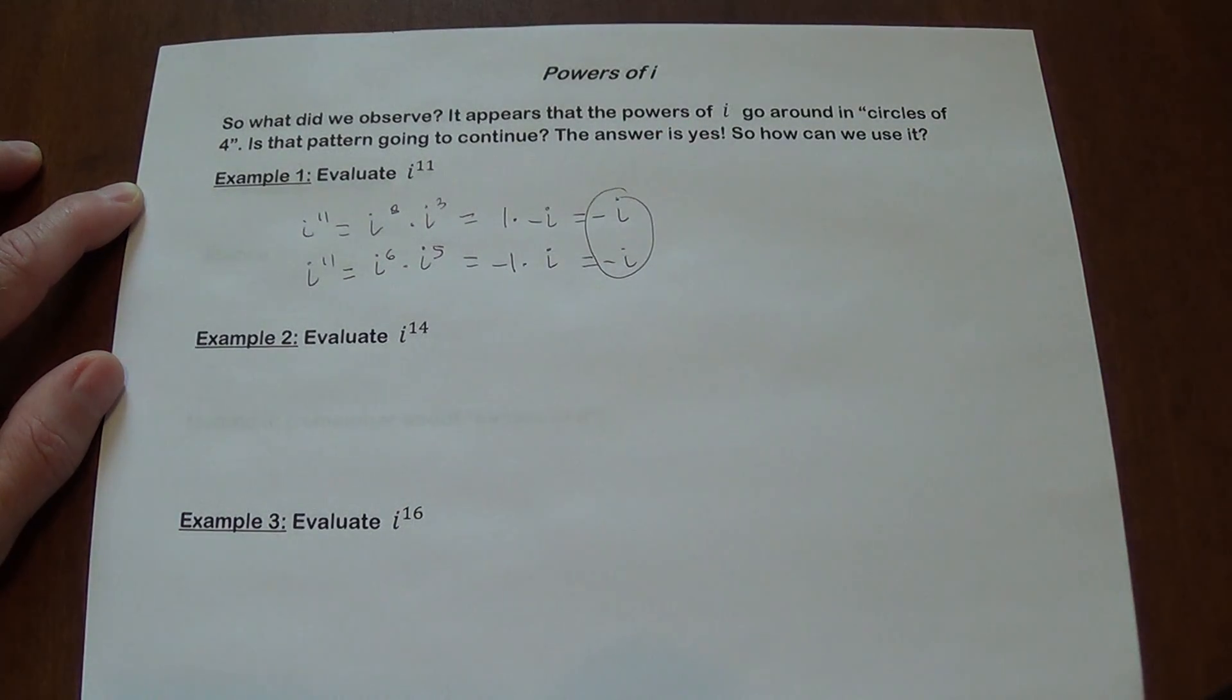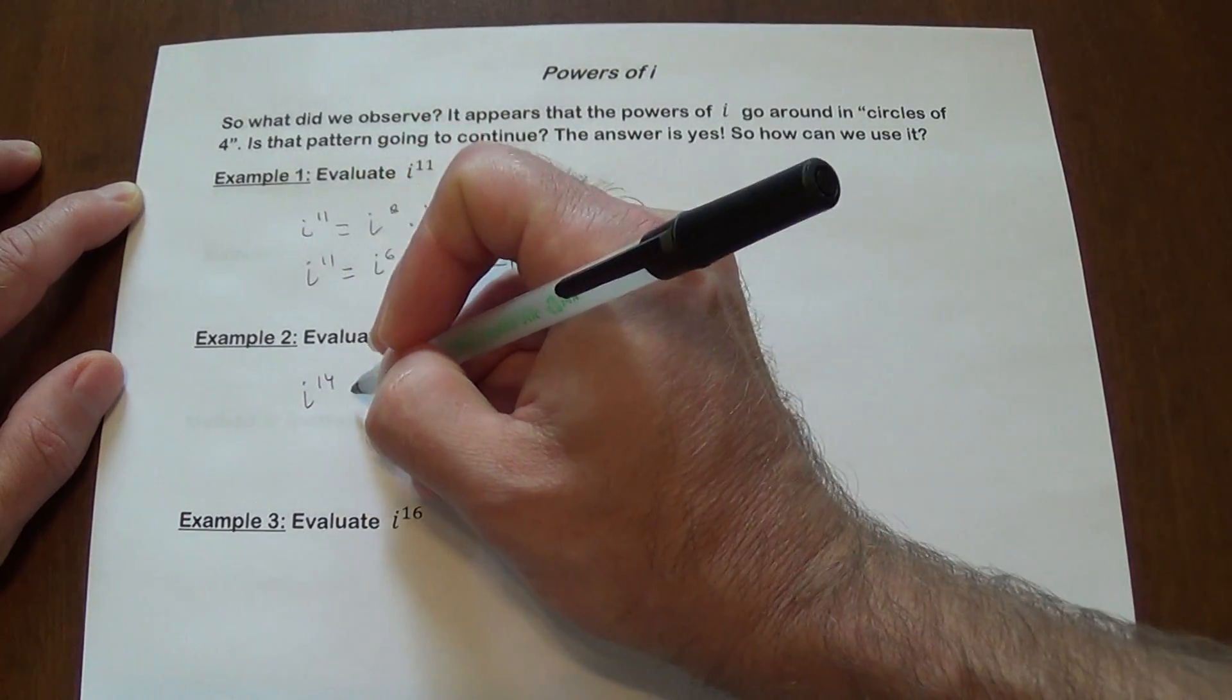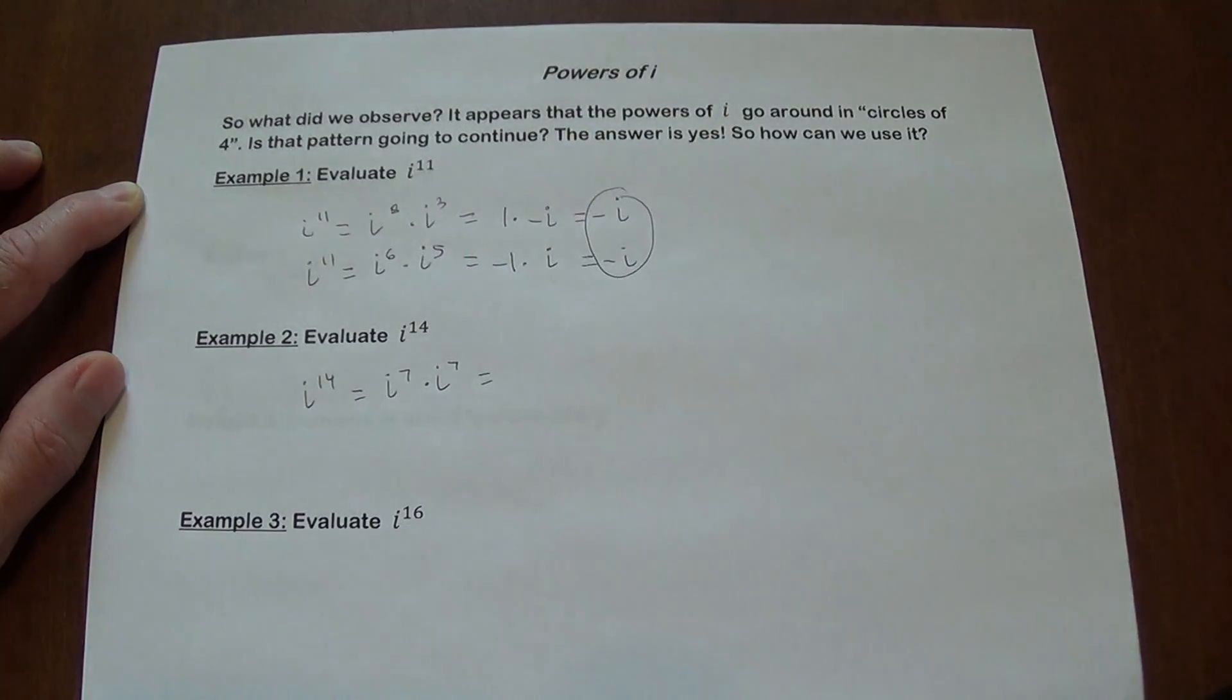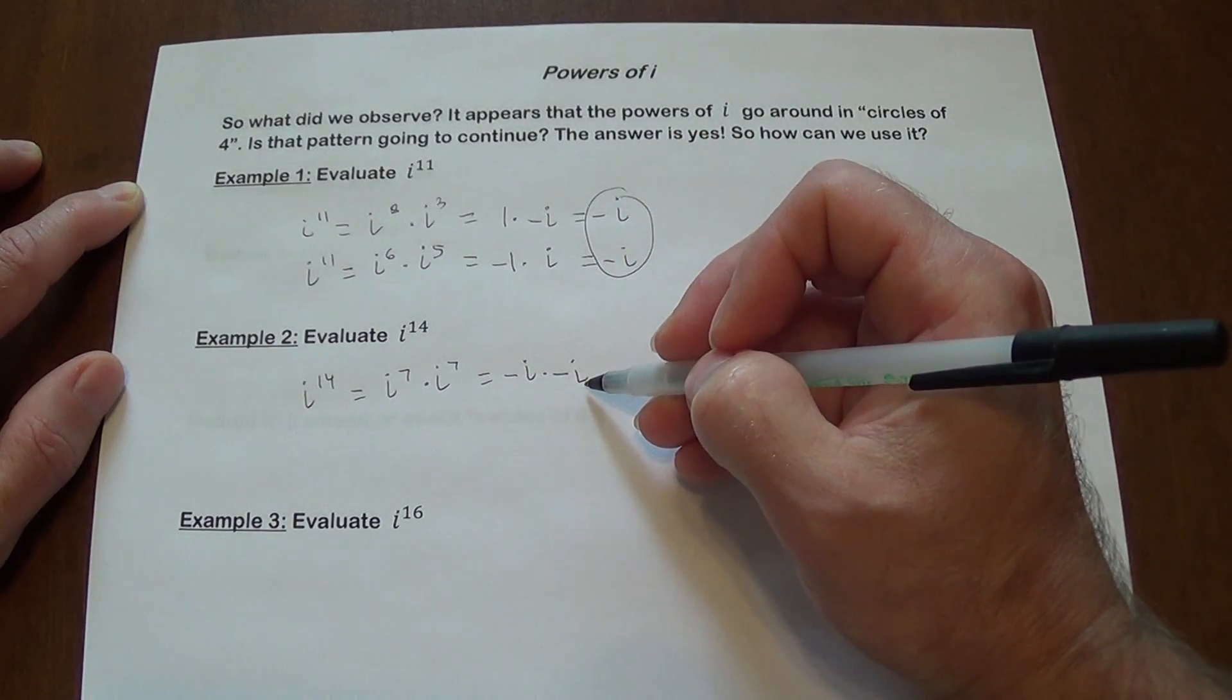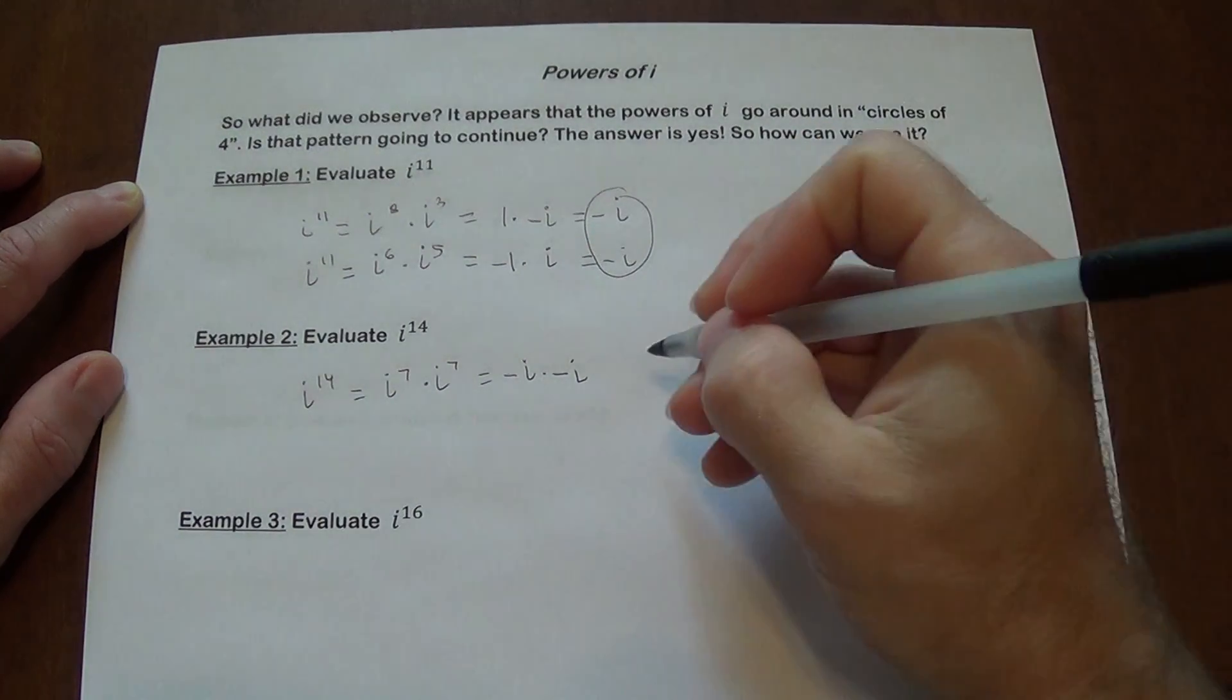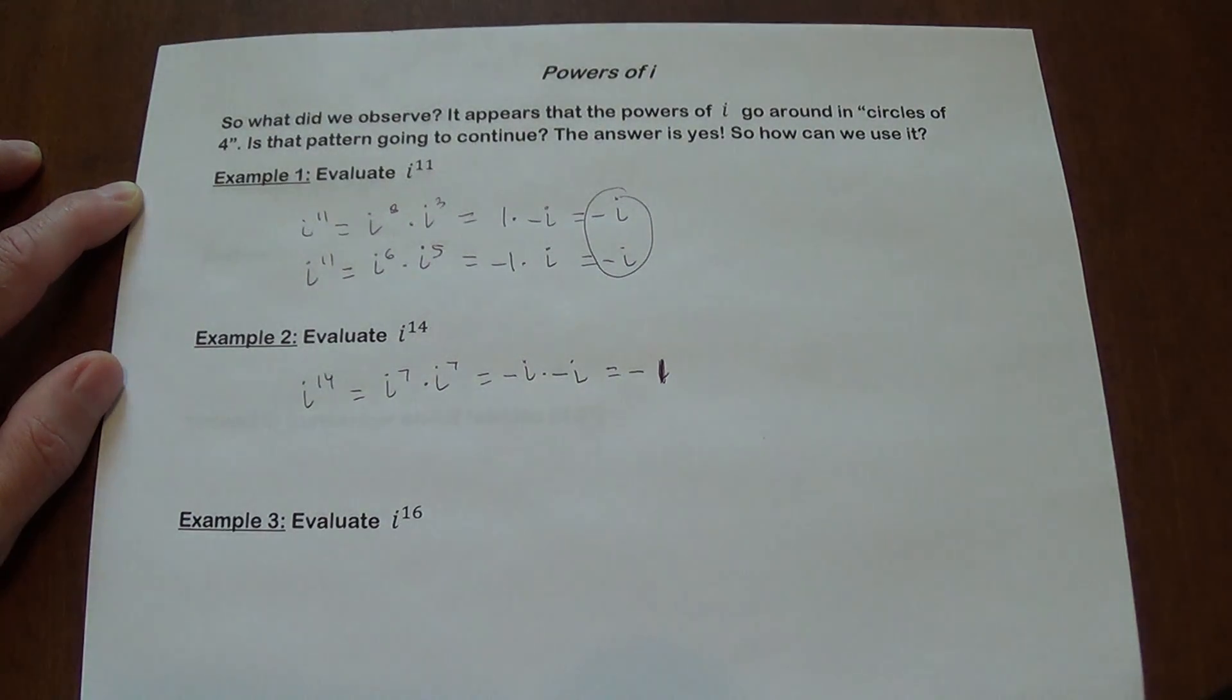What can we do with i to the fourteenth power? One of the possibilities we can do is seven plus seven. Not the only way to do that, but certainly a possibility. i to the fourteenth could be i to the seventh times i to the seventh. Seven plus seven is fourteen. They're both negative i. We need to be careful. i times i is negative one times one. So it's going to give us negative one.